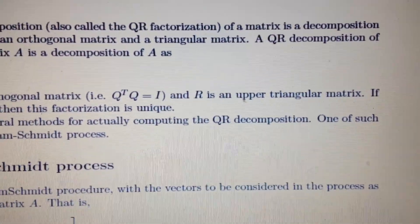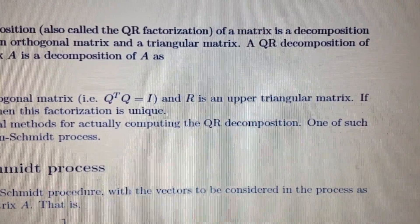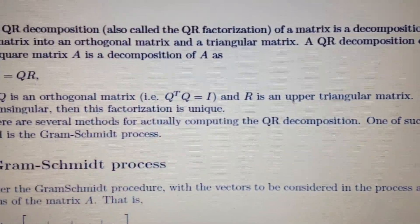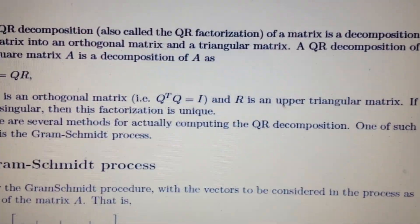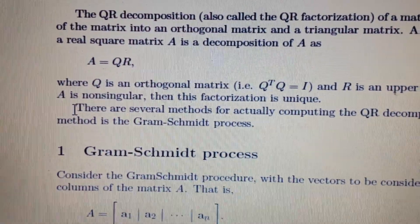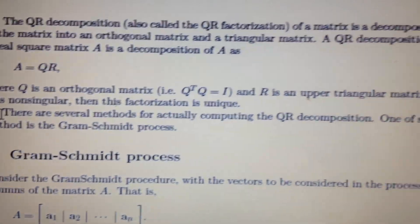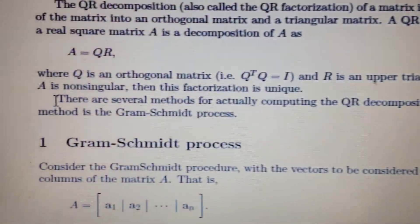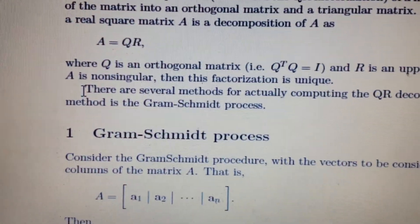The upper triangular component is clear, and by orthogonal we mean Q transpose Q is the identity matrix. Now there are several ways to compute this, and one of them is the Gram-Schmidt process that we're going to look at just now.